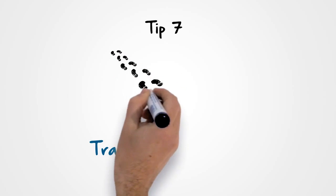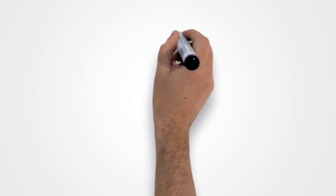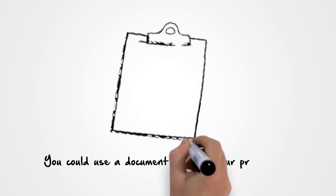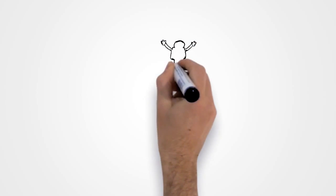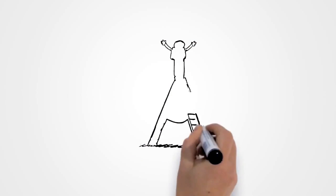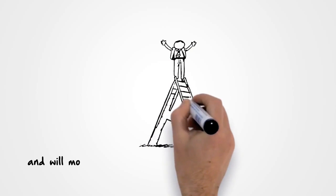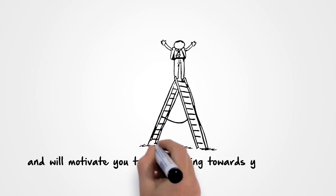Tip 7: Track your progress. You could use a document to mark your progress or regularly update your mentor or support group. Stay aware of your progress as this will help you to adjust if you go off track and will motivate you to keep moving towards your goal.